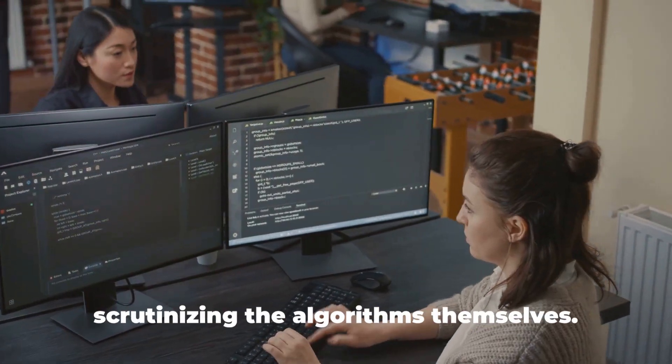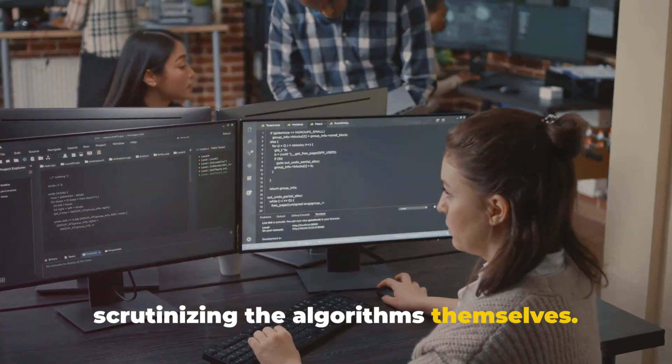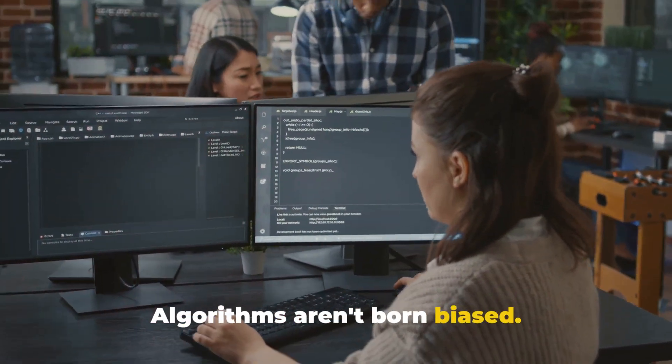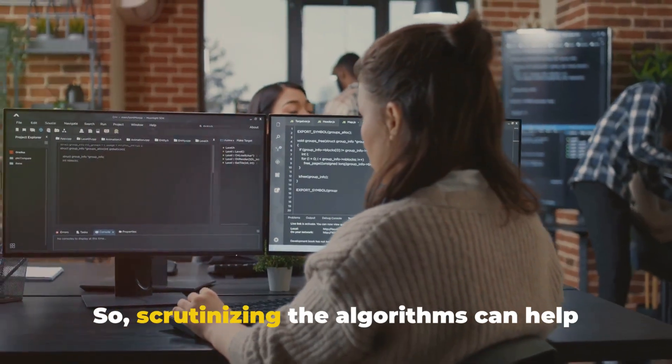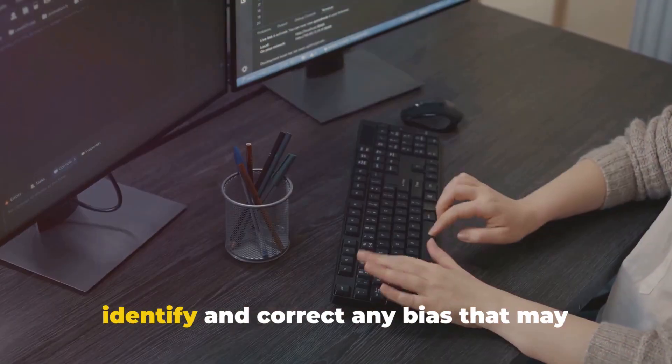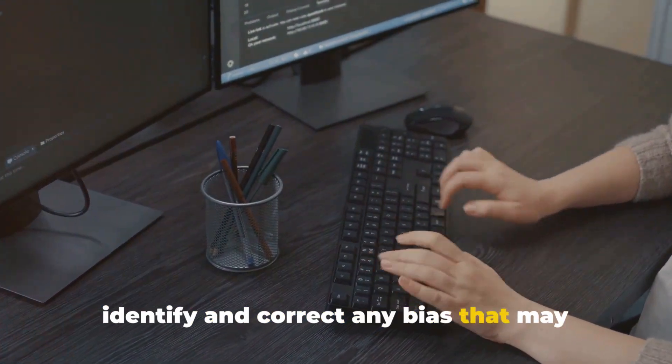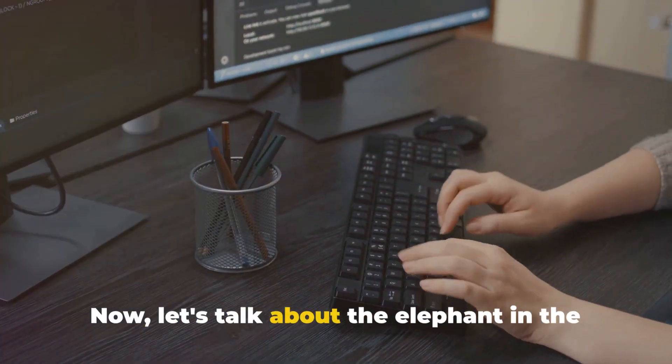Another noteworthy strategy is scrutinizing the algorithms themselves. Algorithms aren't born biased. They become biased when they're trained on biased data. So, scrutinizing the algorithms can help identify and correct any bias that may have crept in.